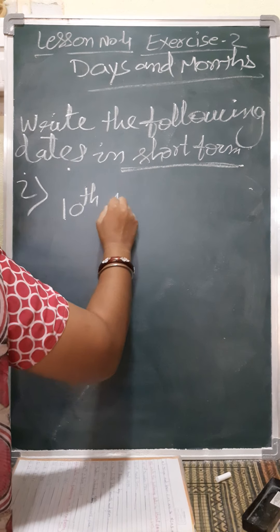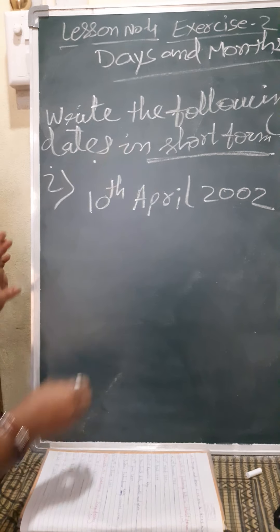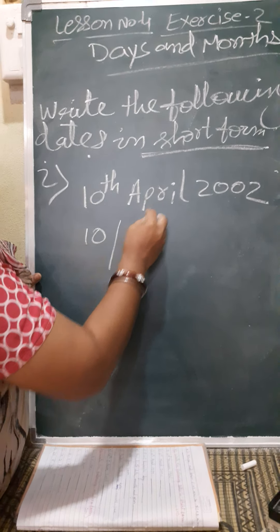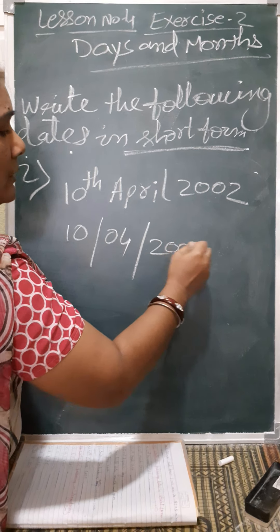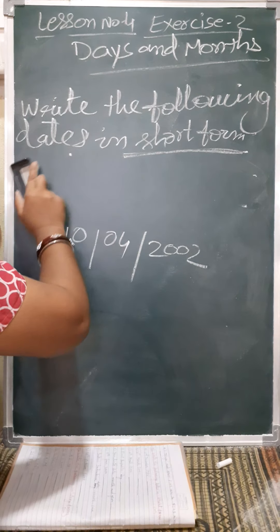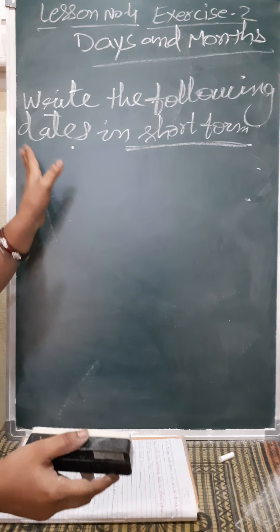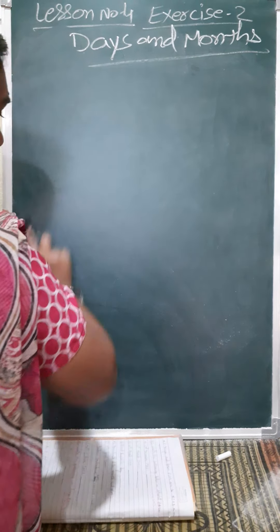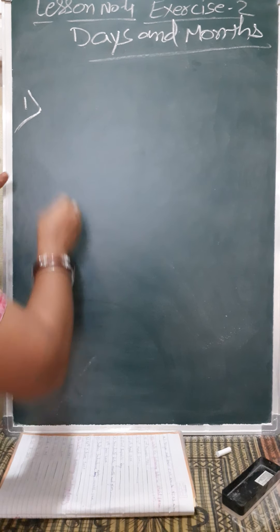Another example: 10th April 2002. The date is 10, April is the 4th month so month is 4, and year is 2002. So in short form it is written as 10/4/2002. Now understood?